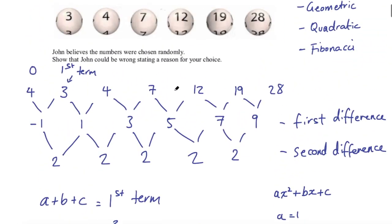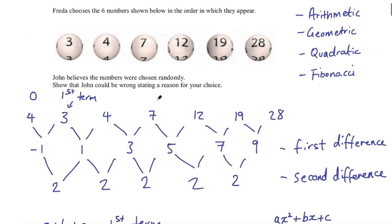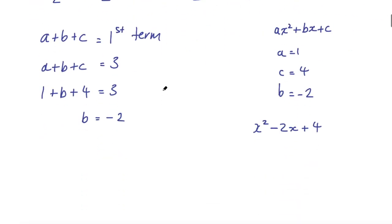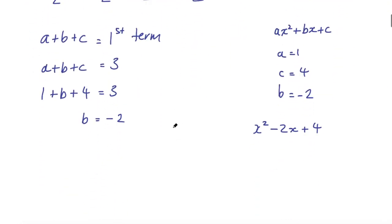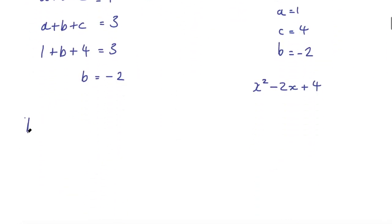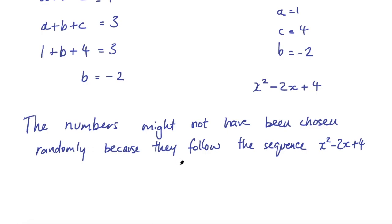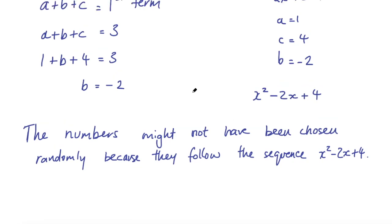We have found a pattern that these numbers follow. Because they follow a pattern, we could say maybe they're not random — it might still be a coincidence, but they might not have been chosen randomly. So the answer is: the numbers might not have been chosen randomly because they follow the sequence x² − 2x + 4. I hope you found that interesting — leave a like if you did, subscribe if you want to see more content, and I'll see you in the next one. Bye for now.